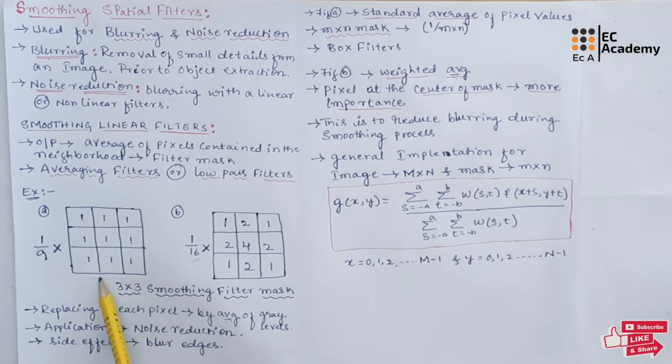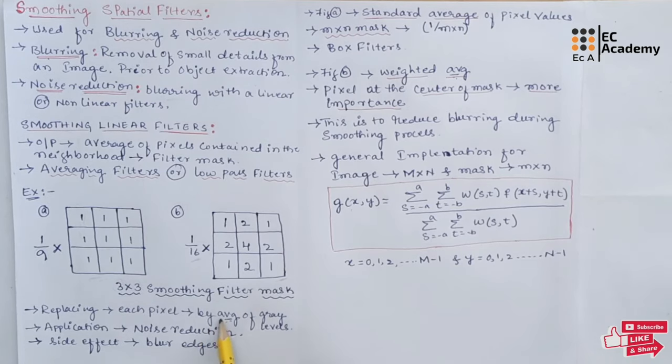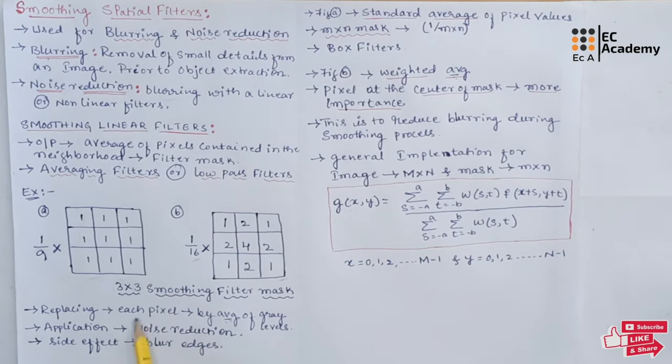So this is a standard average filter mask and this is known as the weighted average filter mask. The smoothing or filtering is the process of replacing each pixel in an image by the average of grey levels in the neighborhood which is defined by the filter mask. So this will result in a sharp transitions in grey level value. Each pixel value in an image will be replaced by the average grey level values of the filter mask after performing the operation.